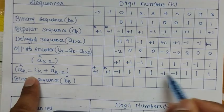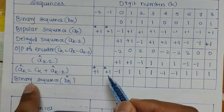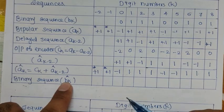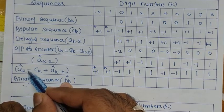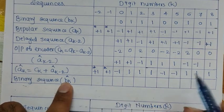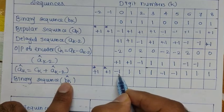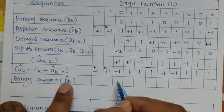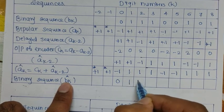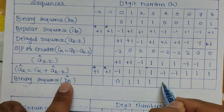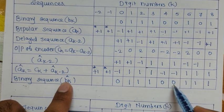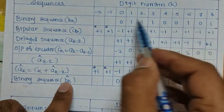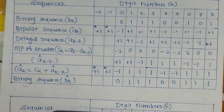Applying the decision device to ak_cap: values less than zero give bk_cap = 0, values greater than zero give bk_cap = 1. So: minus1 → 0; 1 → 1; 1 → 1; 1 → 1; minus1 → 0; minus1 → 0; 1 → 1; 1 → 1; 1 → 1. The received sequence is 0, 1, 1, 1, 0, 0, 1, 1, 1 — which matches the original transmitted sequence 0, 1, 1, 1, 0, 0, 1. This confirms the encoded and decoded output is correct.